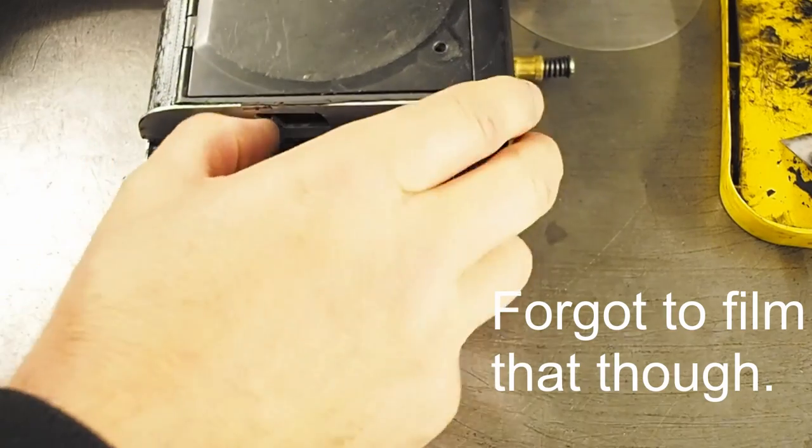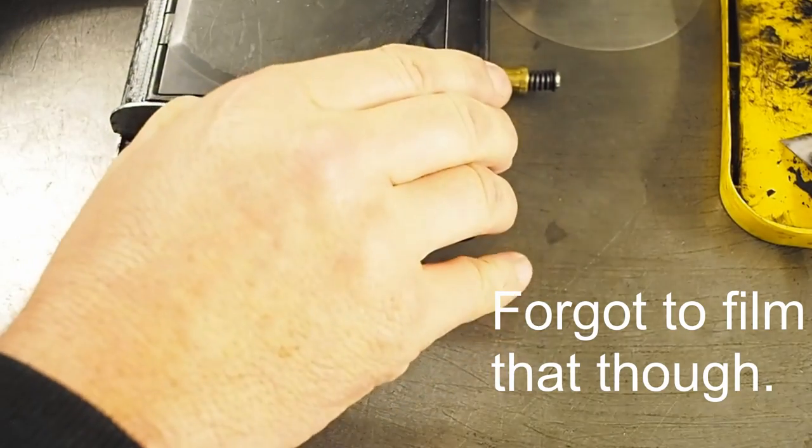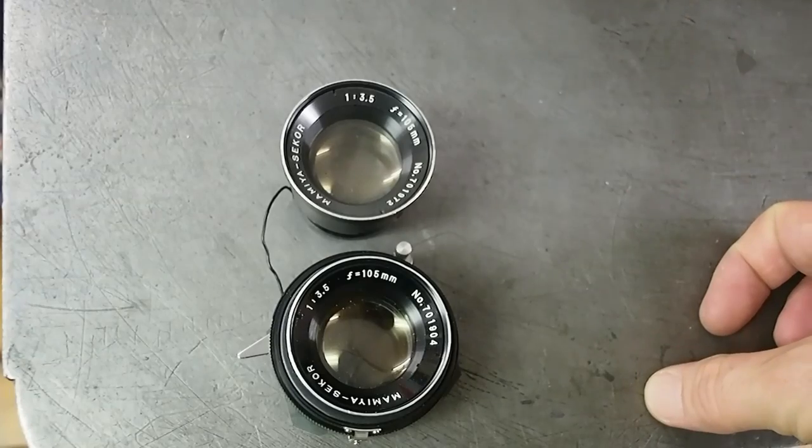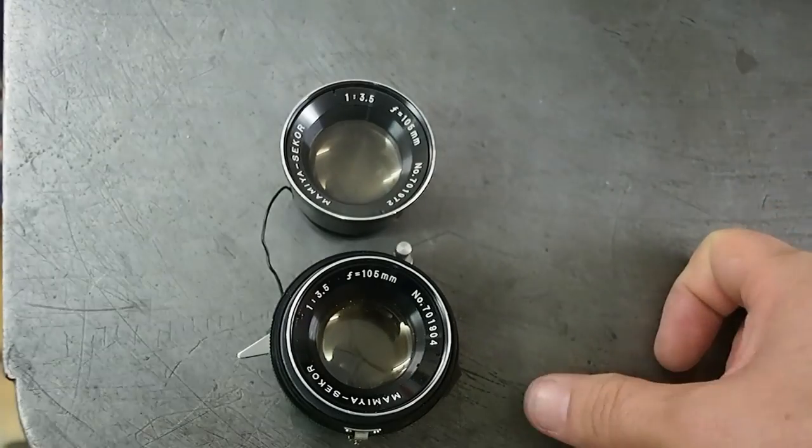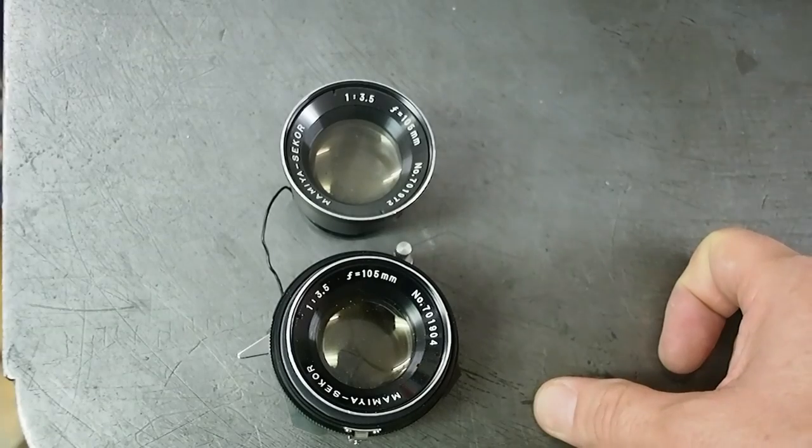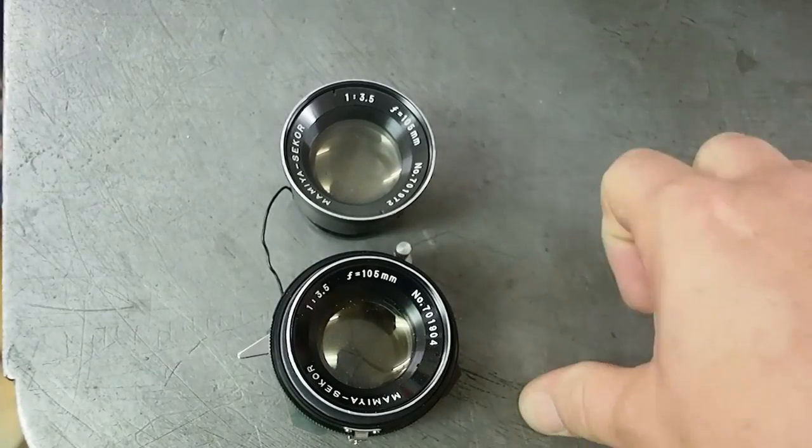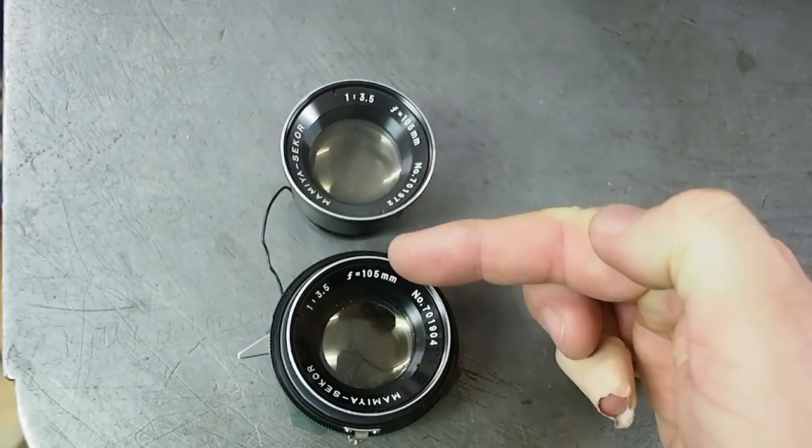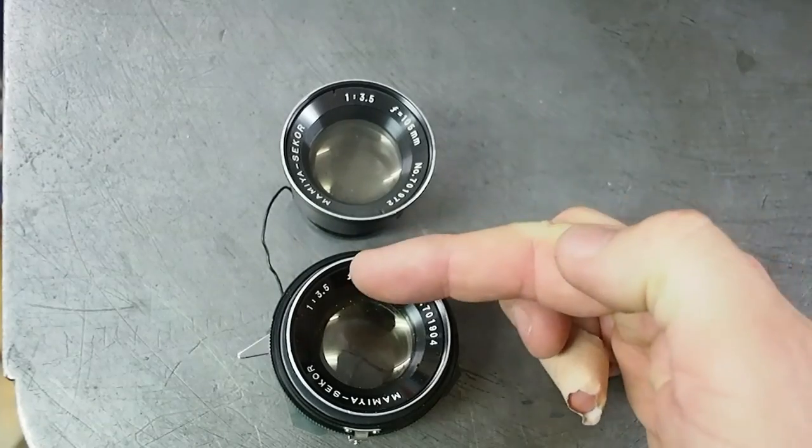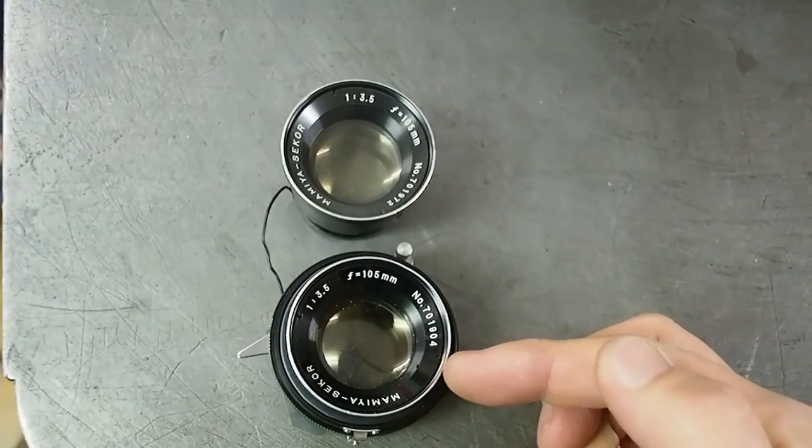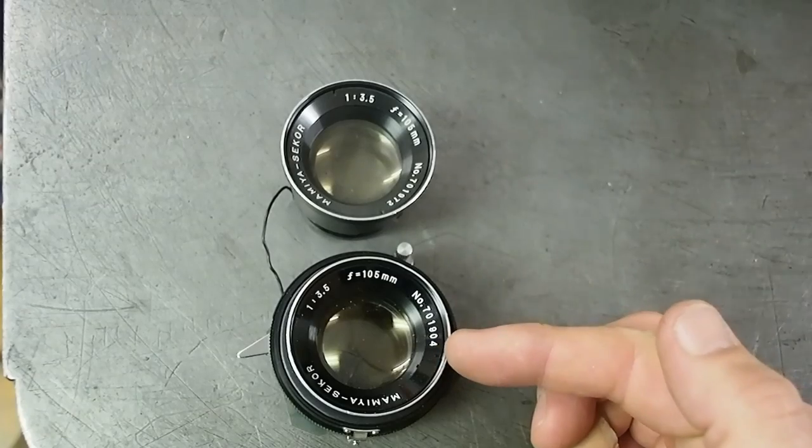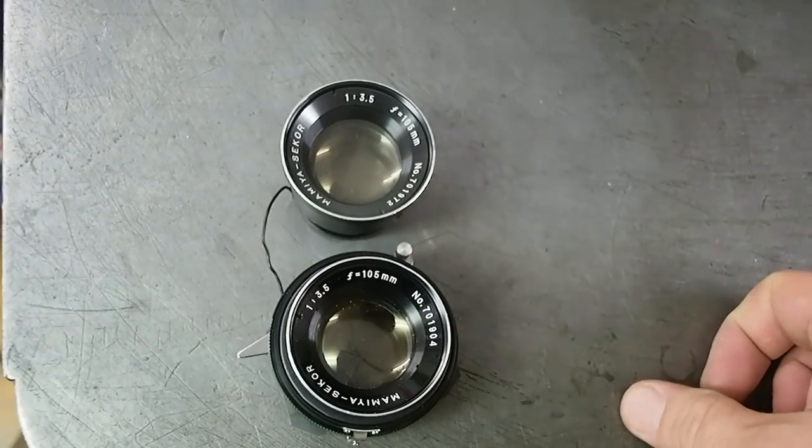Following the advice of the guy Frank who did the Duo TLR, which was kind of a wooden twin lens reflex for pack film, he recommended using the 105mm f/3.5 from Mamiya. This was a slightly longer standard lens for the C330 TLR.